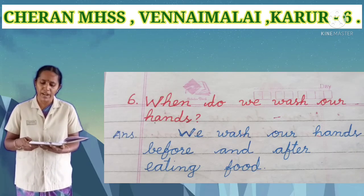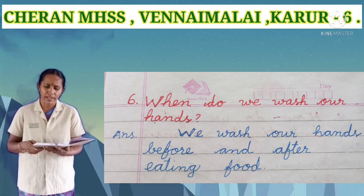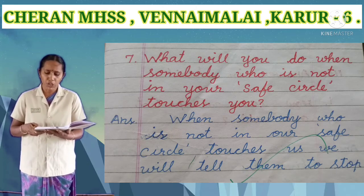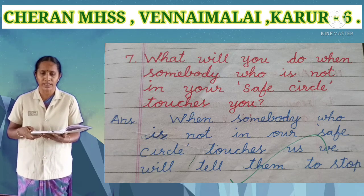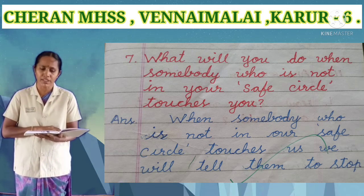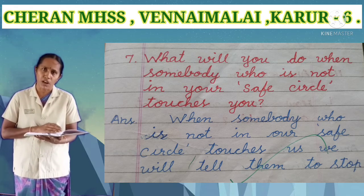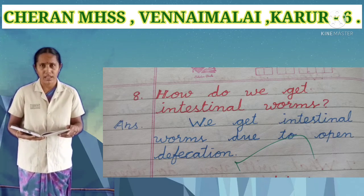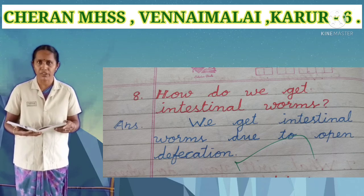Sixth one: when do we wash our hands? Answer: we wash our hands before and after eating food. Seventh one: what will you do when somebody who is not in your safe circle touches you? Answer: when somebody who is not in our safe circle touches us, we will tell them to stop. Eighth one: how do we get intestinal worms? Answer: we get intestinal worms due to open defecation.